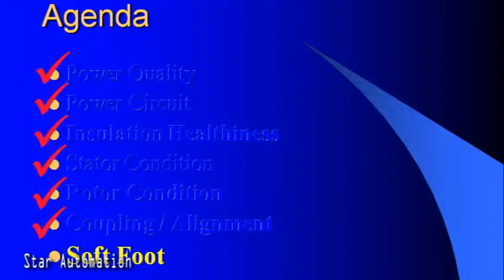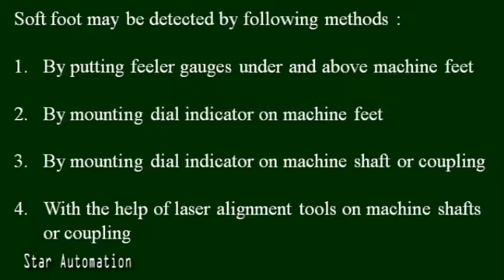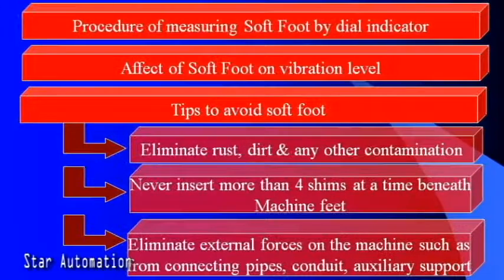Finally, we will discuss motor soft foot. Soft foot may be detected by: putting feeler gauges under and above machine feet; mounting a dial indicator on machine feet; or mounting a dial indicator on the machine shaft or coupling using laser alignment tools. Topics covered include presence and effects of soft foot, procedure for measuring soft foot by dial indicator, and the effect of soft foot on vibration level. Tips to avoid soft foot: eliminate rust, dirt, and contamination; never insert more than four shims at a time beneath machine feet; and eliminate external forces on the machine such as from connecting pipes, conduit, and auxiliary supports.